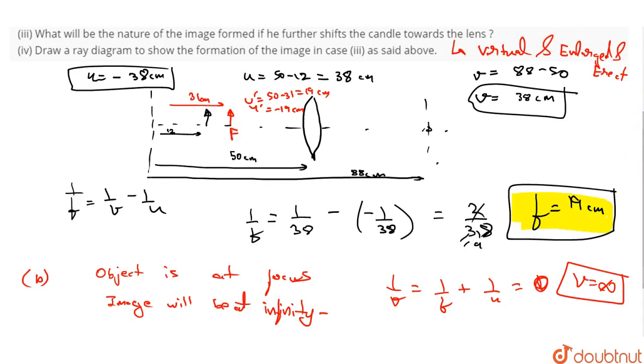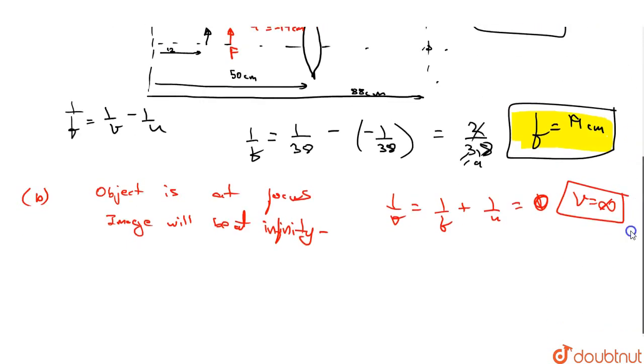Now we need to make a ray diagram to justify it. This is our convex lens. This is focus. Radius of curvature. Left side focus. Radius of curvature. The object is between focus and pole. The first ray is parallel and passes through focus. And one ray goes through center of curvature. Now rays are diverging here, so they will never meet. So we extend them backwards. Look. This is our virtual, erect, and enlarged image.